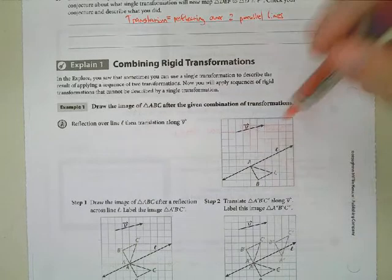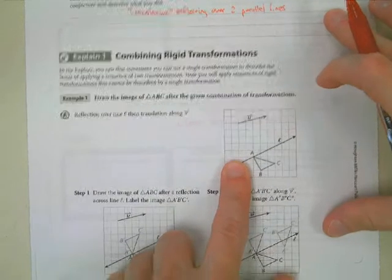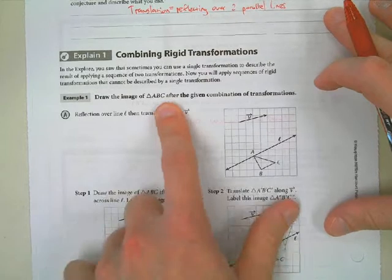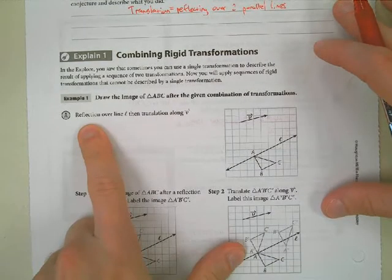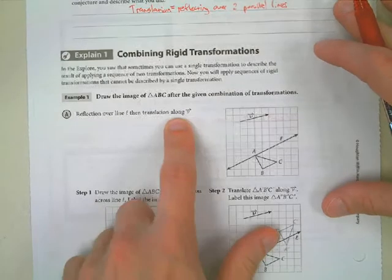All right. So our first directions here are to draw the image of triangle ABC after the given combination of transformations. We're going to do a reflection over line L, then translation along vector V.